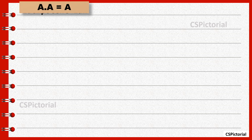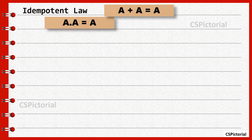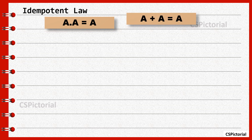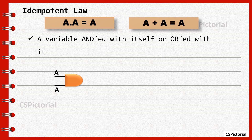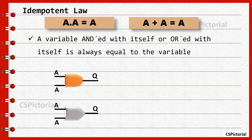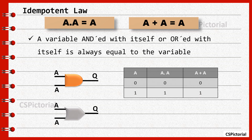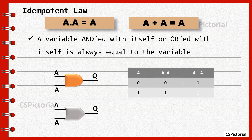The next law is idempotent law, which states that A dot A equals A and A plus A equals A, which means any variable ANDed with itself or ORed with itself always equals that variable. This is also proved using a truth table.